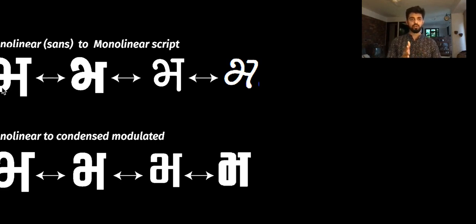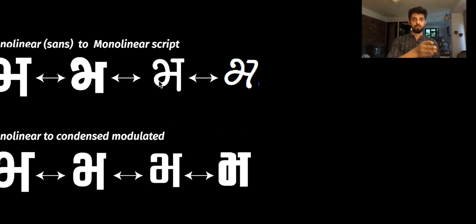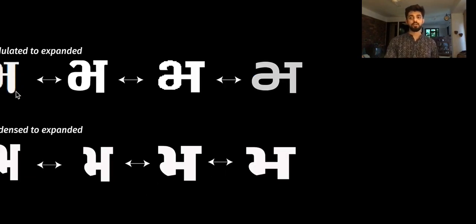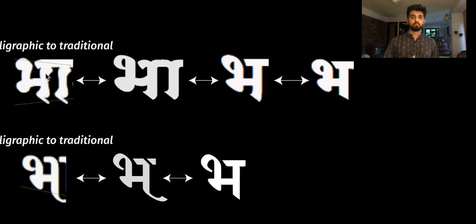The map led to interesting findings of how one category morphed into a different category in various steps. We can see a transition from a monolinear geometric typeface to an organic handwritten typeface, with fonts in the middle being transitional between the two. Another example is a geometric monolinear typeface transitioning to a condensed but slightly modulated typeface. Another is a modulated typeface transitioning to an expanded monolinear typeface, where the contrast reduces gradually, the letter expands, and the geometry changes. We also see how a calligraphic typeface morphs into a traditional typeface — both share similar angle of cant and scribing tool, but the proportions are more rationalized and the use case shifts from display to text.